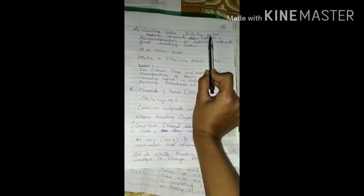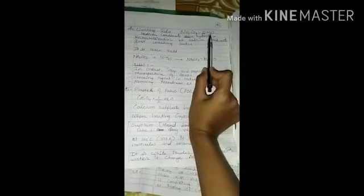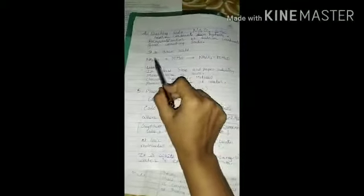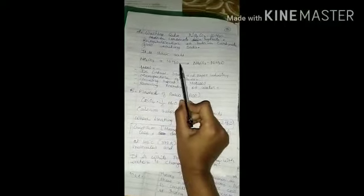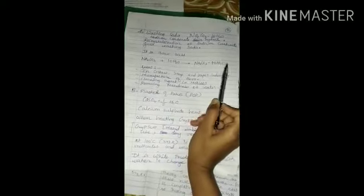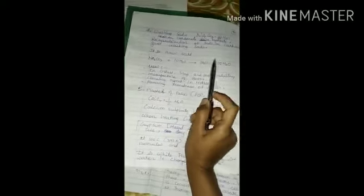It is known as sodium carbonate decahydrate. Water is known as hydrate. Recrystallization of sodium carbonate gives washing soda. It is a basic salt. It is written as Na2CO3 plus 10H2O gives Na2CO3.10H2O. The reaction takes place in this way.